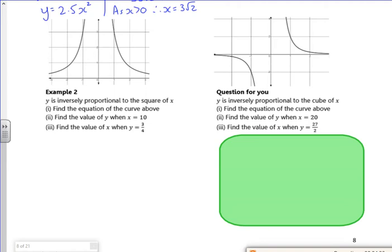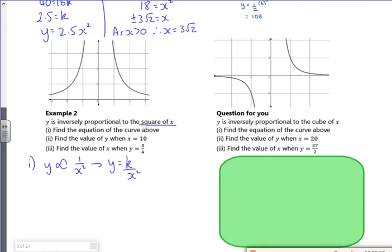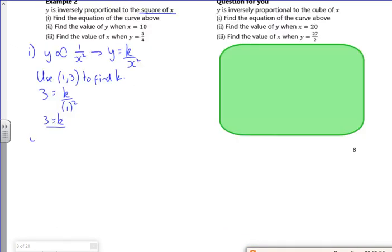Let's have a look at example 2. It says y is inversely proportional to the square of x. So y proportional to 1 over x squared. So y is k over x squared. And that's like a volcano type graph. That's my equation. Now I've got to have some information to look out what the k value is. If I look on the graph, it goes through 1 comma 3. So I'm going to use 1 comma 3 to find k. 3 for k. So my equation is y equals 3 over x squared.